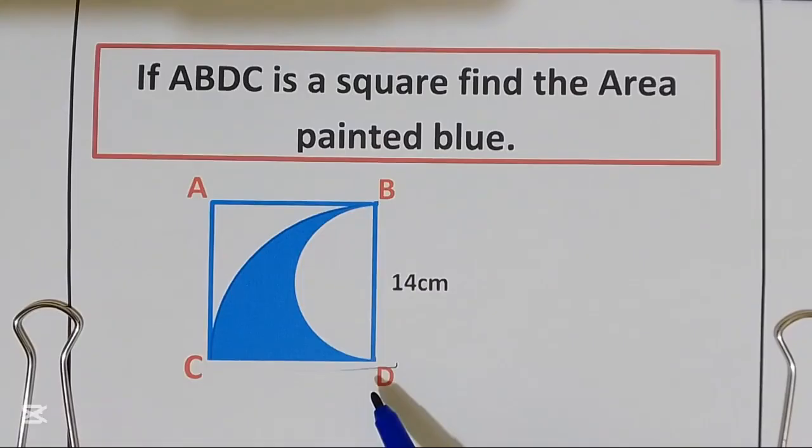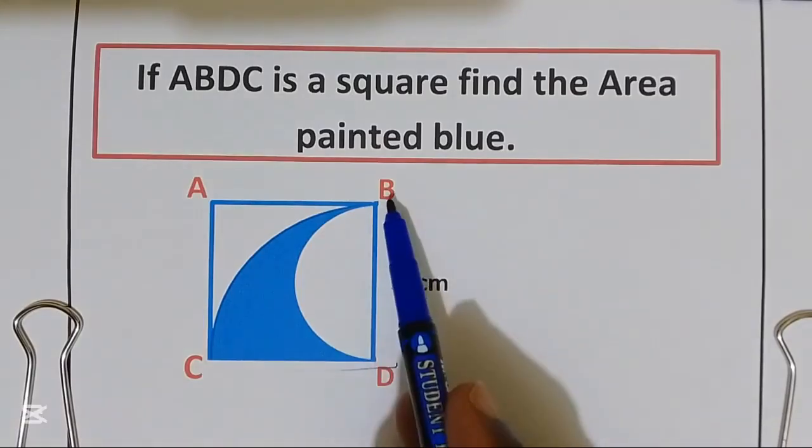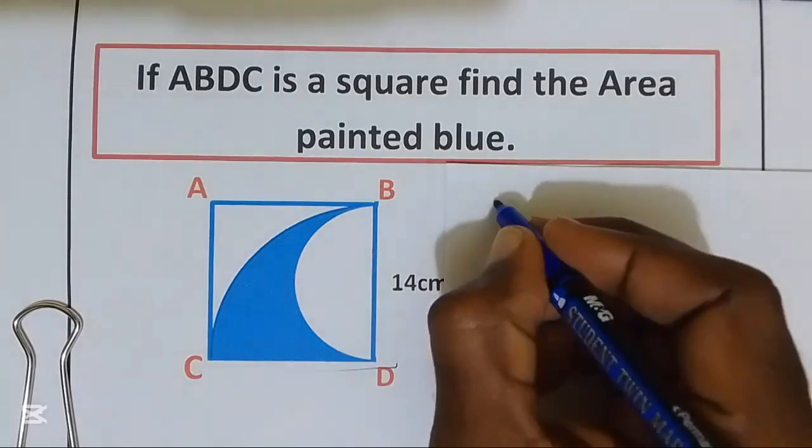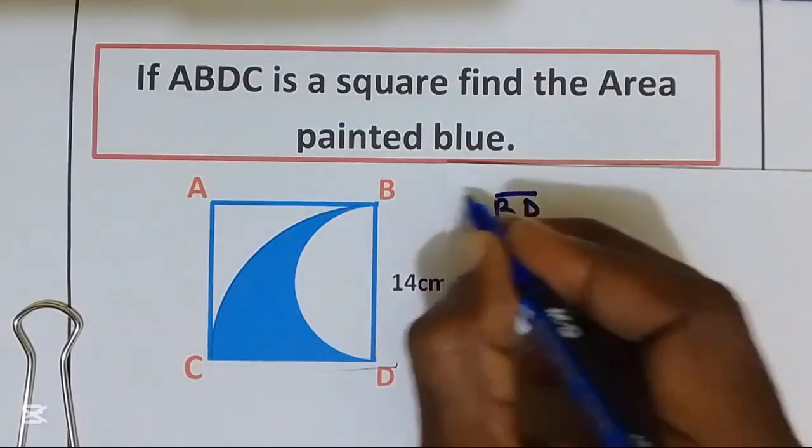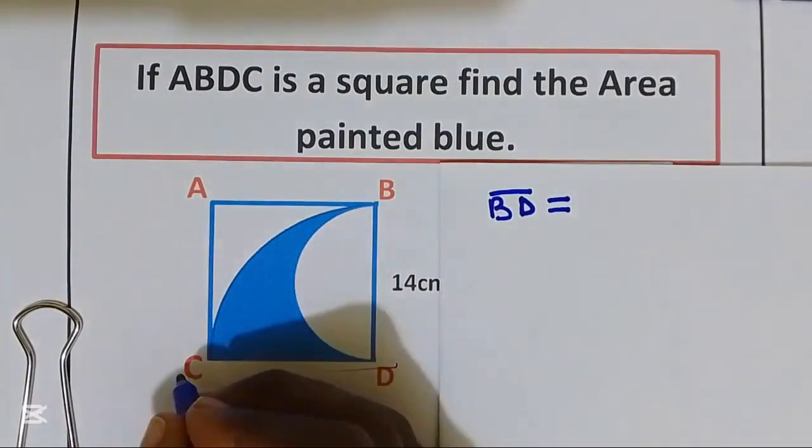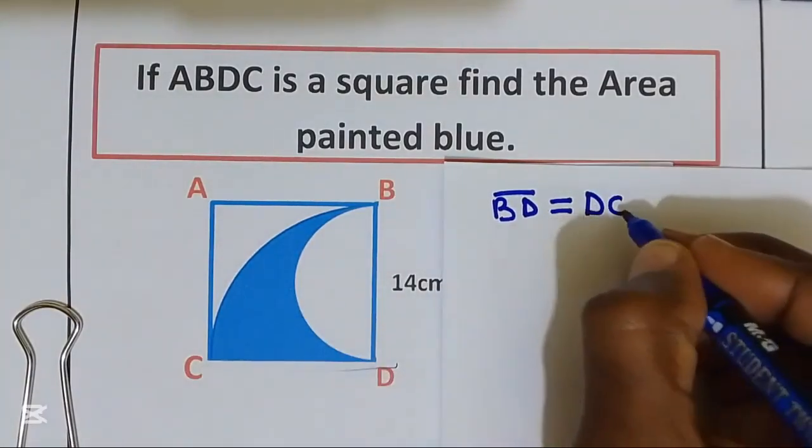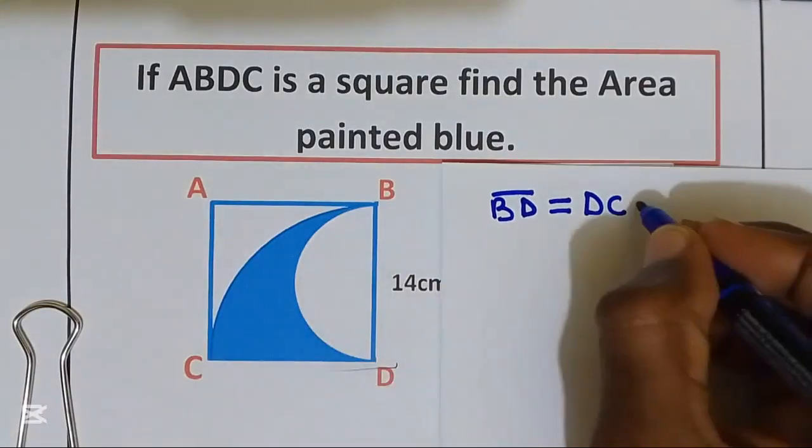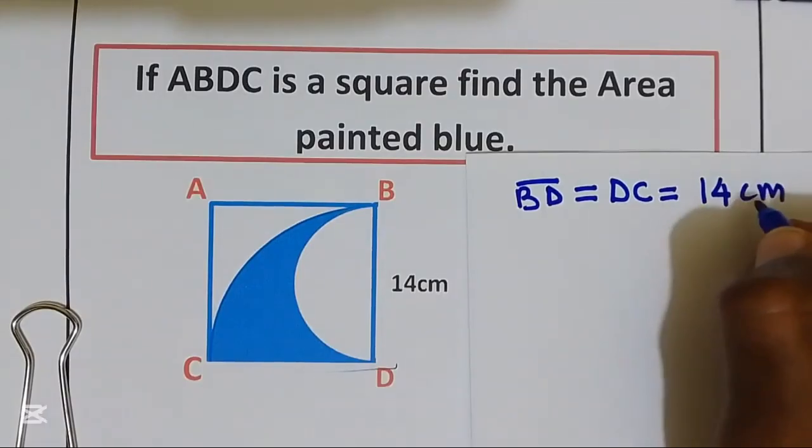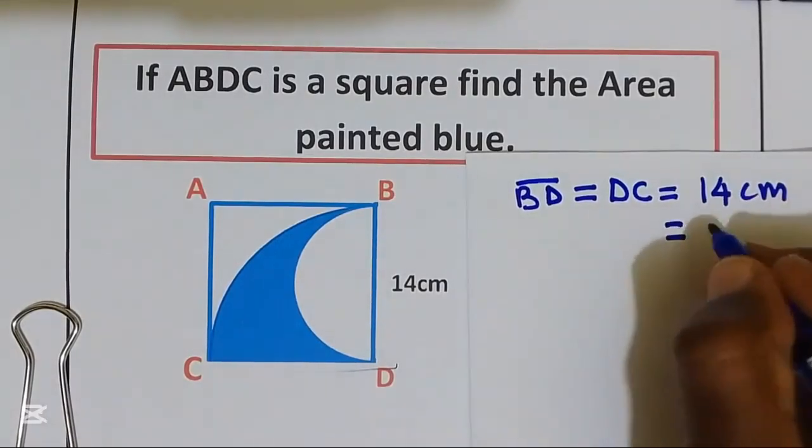Let us first find the area of quarter-circle B, C, D. We know that distance B, D, this is equal to distance D, C, since this is a square. So this is equal to 14 cm, and also, this is equal to radius.